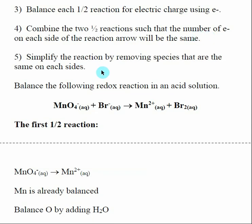When you simplify the combined reaction by removing species that appear on both sides, at the very least you must cancel out the electrons. If after simplifying you still have electrons left over, you've done something wrong. In a fully balanced redox reaction, the electrons are hidden — you can't see them in the overall equation. You have to break it into half reactions to actually see the electrons being moved.